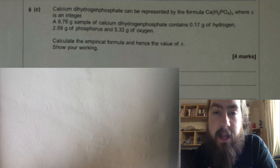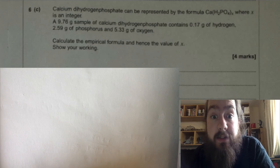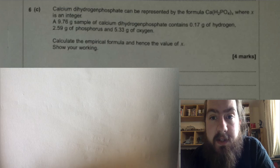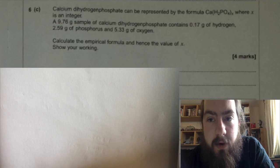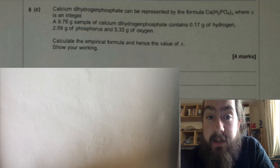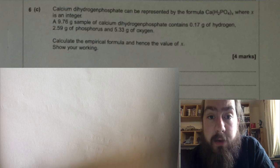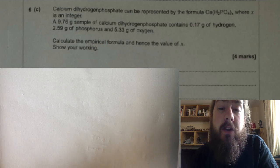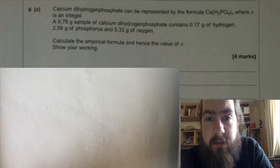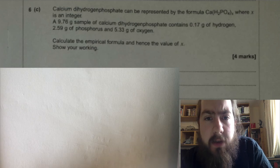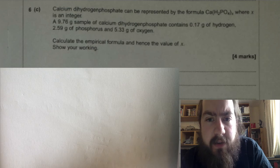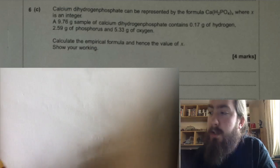Last calculation in the question, 6c: Calcium dihydrogen phosphate can be represented by the formula Ca(H₂PO₄)ₓ, where x is an unknown number. A 9.76 gram sample of calcium dihydrogen phosphate contains 0.17 grams of hydrogen, 2.59 grams of phosphorus, and 5.33 grams of oxygen.